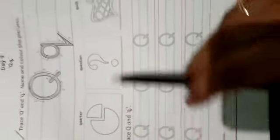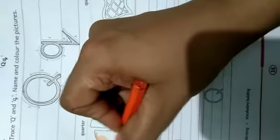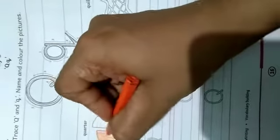After that we have related pictures. First picture is quarter, cushion and quilt. So what are we going to do? We are going to color these pictures. Let's take a color of your choice, any color, and just color the picture.